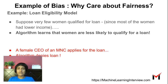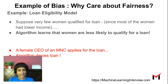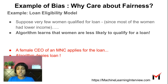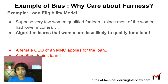Now it's possible that there are very few women who actually qualified for a loan in our dataset. This could be because most of the women had a lower income perhaps, but the algorithm might learn that women are less likely to qualify for a loan. So it's possible that a highly successful female CEO actually applies for a loan from an MNC and is denied a loan because our model has learned that women are less likely to qualify. This is clearly not what we want — our model is not being fair.